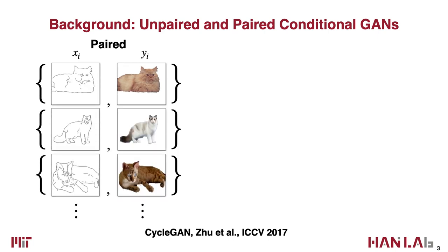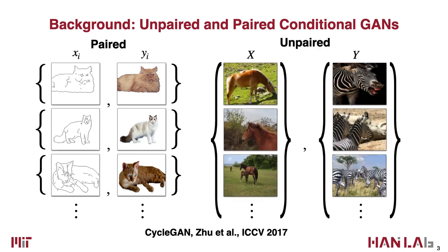The paired one, such as Pix2Pix, has ground truth input-output pairs during training. Just as the label image — for each cat sketch, we know the ground truth cat image. In contrast, for the unpaired one, such as CycleGAN, the only thing we have is a collection of images from the horse domain and a collection of zebra images. The algorithm needs to learn the mapping at the same time without ground truth pairs.